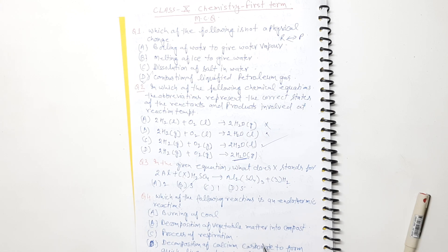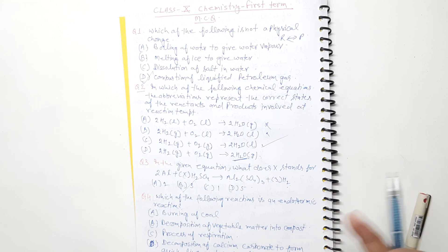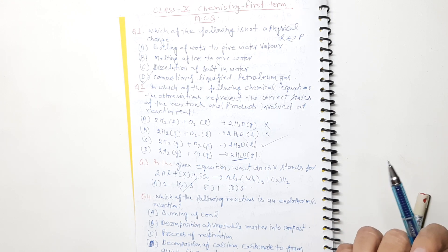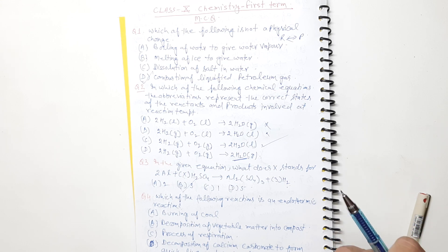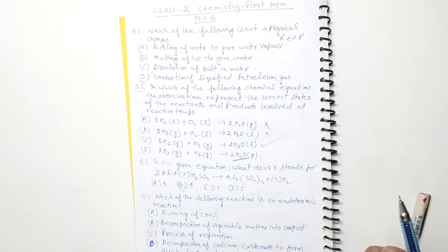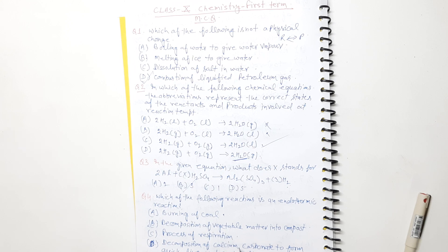Decomposition of vegetable matter into compost — you may have observed that garbage and organic waste, when it decomposes or ferments, or where there are many plants rotting or cow dung cakes lying around, the temperature in that area is slightly higher. This means heat is being evolved there. So decomposition of vegetable matter into compost is also an exothermic reaction — this option is incorrect.